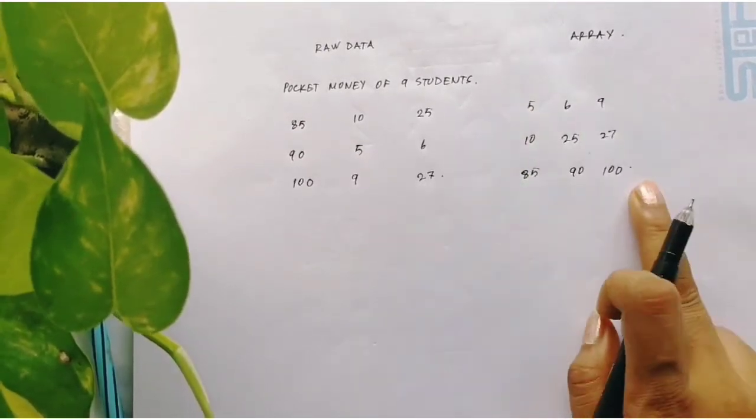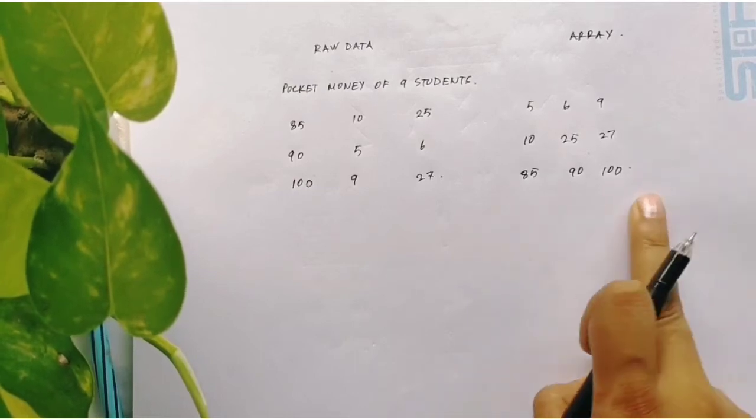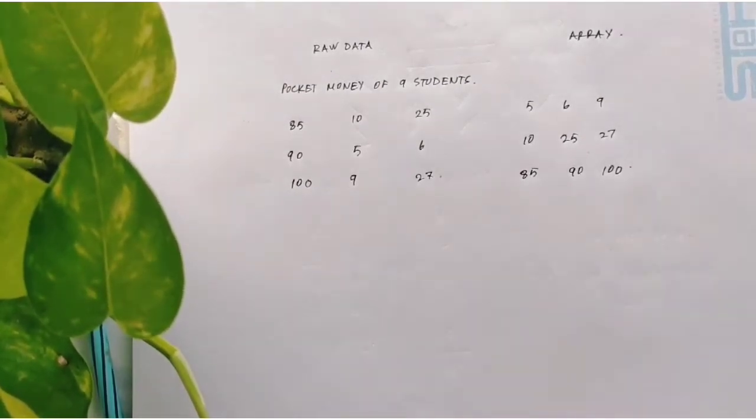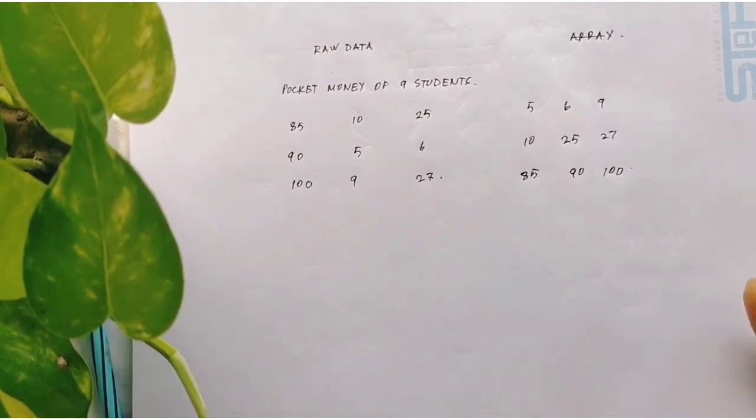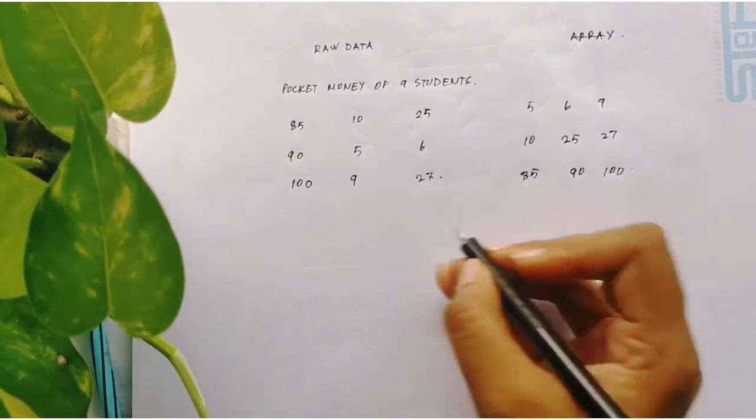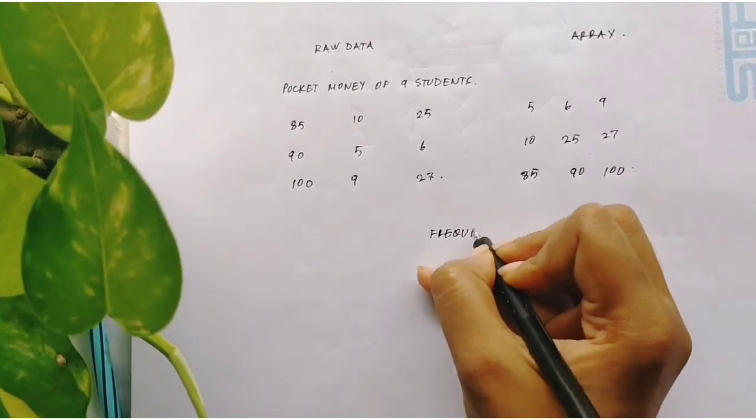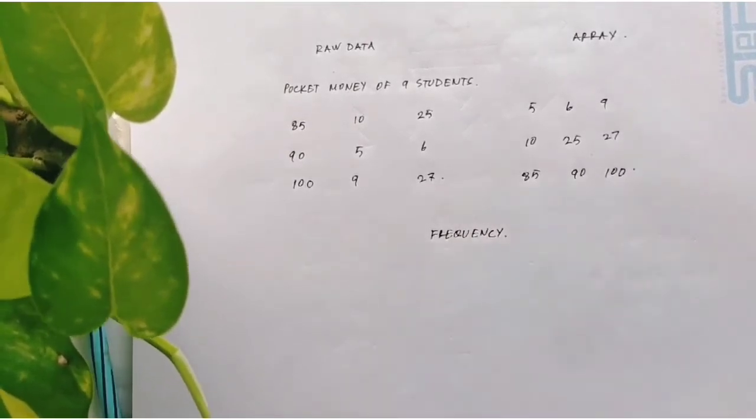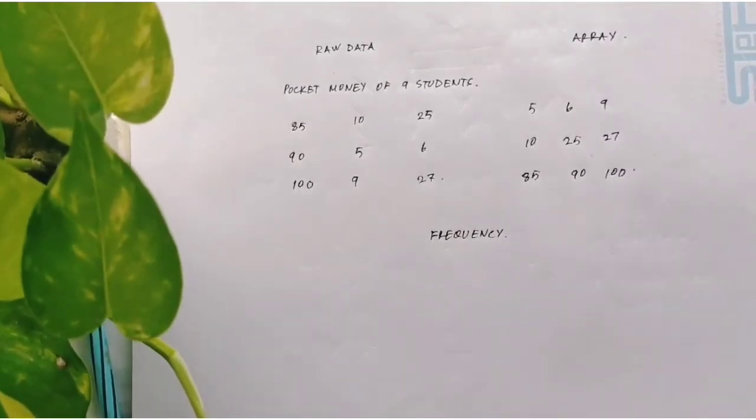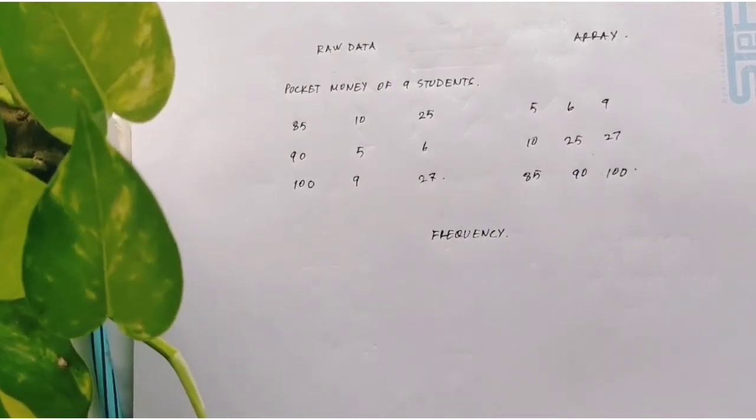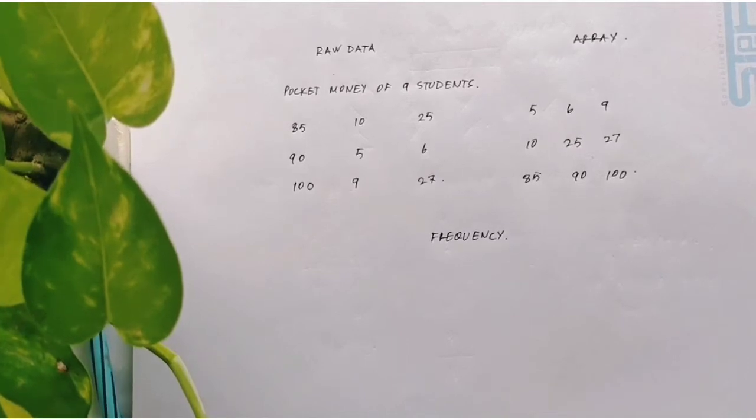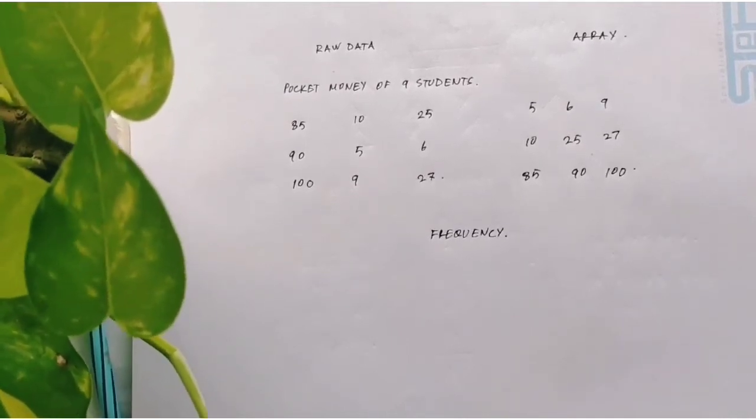So this is an array. Okay, now next question is how to take out the frequency of any raw data. Now what is frequency? Frequency means how many times something is occurring.